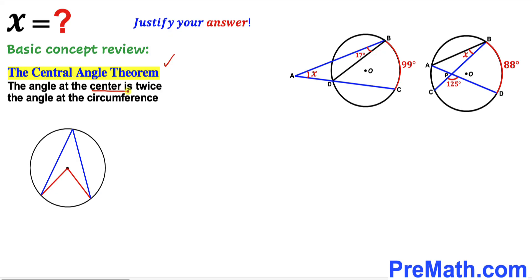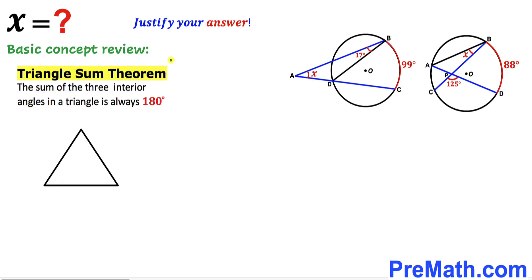Now let's recall the central angle theorem. According to this theorem, the angle at the center is twice the angle at the circumference. The center of the circle gives us the central angle, and the angle at the circumference is the inscribed angle. If the angle at the center is 80 degrees, then the angle at the circumference is half of that — 40 degrees. Furthermore, the arc measurement equals the central angle, so an 80-degree central angle gives an 80-degree arc.